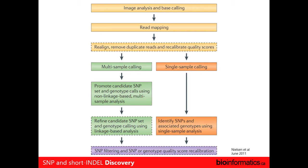It becomes sort of an iterative type approach. The sample column will identify a series of candidate SNPs, and then you might do some additional filtering at the end, or you might tweak those filters and go back.